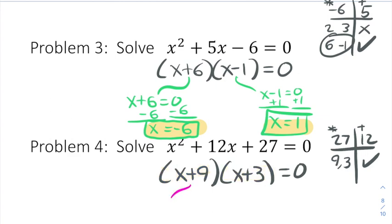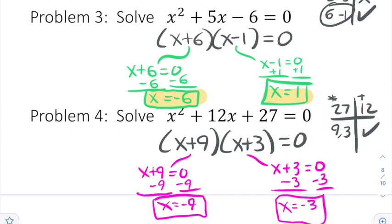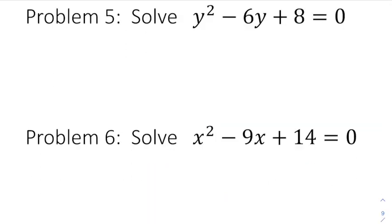So I'm now going to use ZPP and set x plus 9 equal to 0 and x plus 3 equal to 0. That gives me solutions of negative 9 and negative 3. And this problem is done. We started with one form, factored it into another form, and then used ZPP to get our solutions.